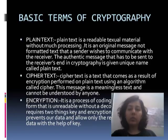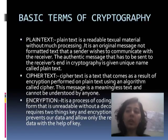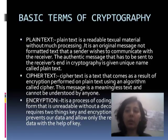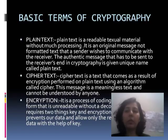Encryption is a process of coding information into a form that is unreadable without a decoding key. It requires two things: keys and encryption algorithms. It protects our data and allows only the receiver to read it with the help of the key. For example, if I have bank or personal details to share, I will send them in encrypted form — converting the message into a code so that others cannot read it, only cipher text.